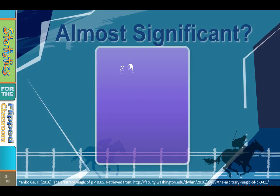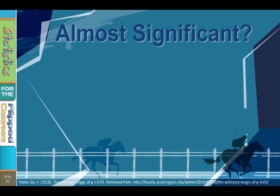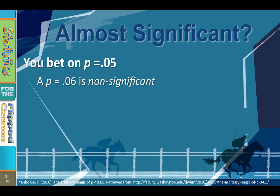Number four, there is no such thing as almost significant. Think of null hypothesis statistical testing like a horse race. You pay your money and you place your bets, and you bet on P equals 0.05. Then you run your experiment, and only probabilities smaller than 0.05 are significant. That is how the game is played. If your P equals 0.06, the difference is non-significant, not marginally significant. But don't be too disappointed if you think that P equals 0.06 is pretty close to significant.